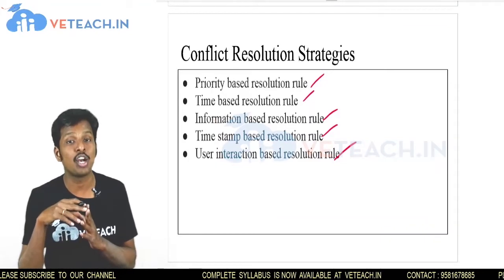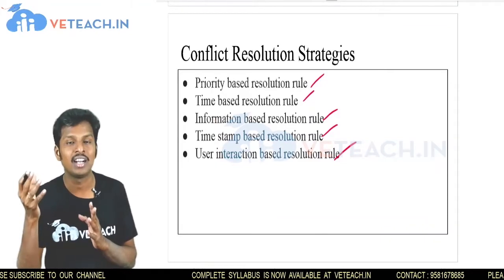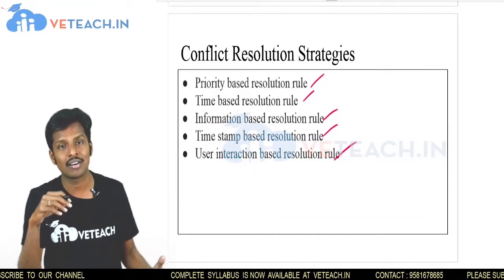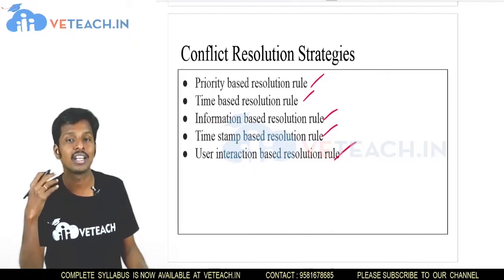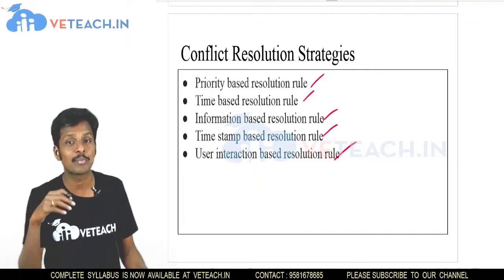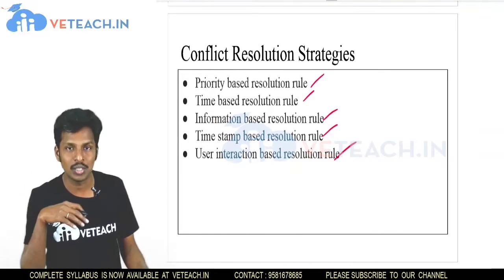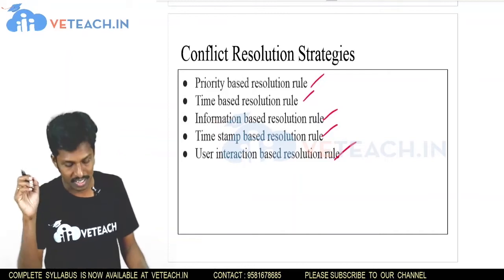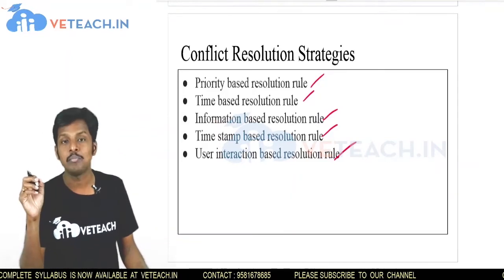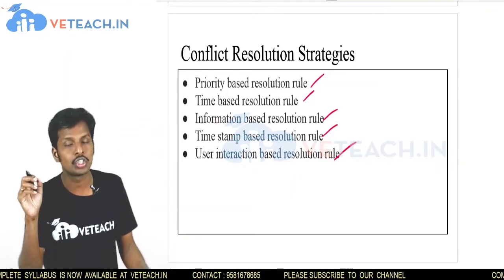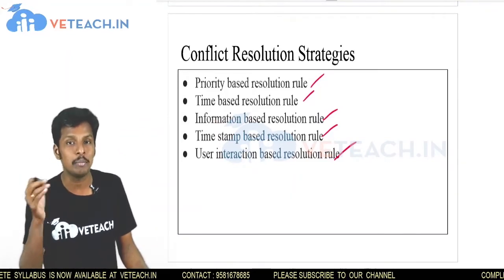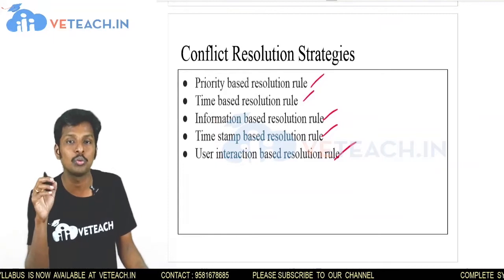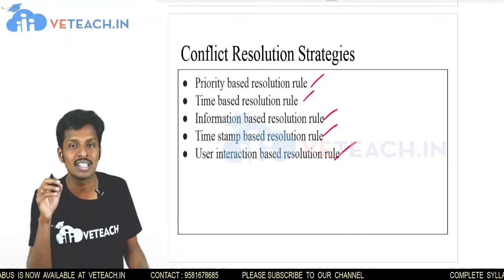In priority-based resolution, data is synchronized according to the priority assigned to it. Whichever data has the highest priority is the data that gets synchronized between the devices.